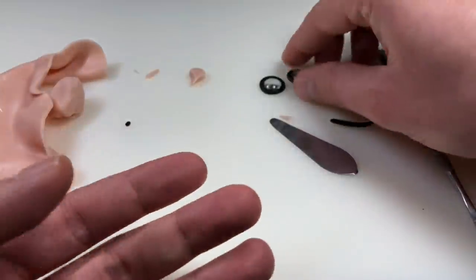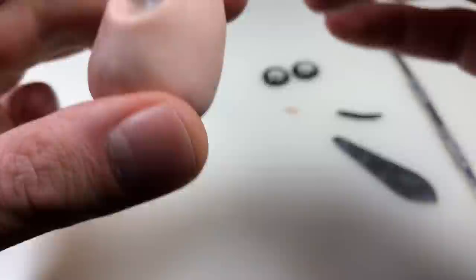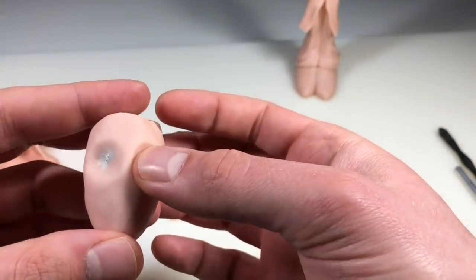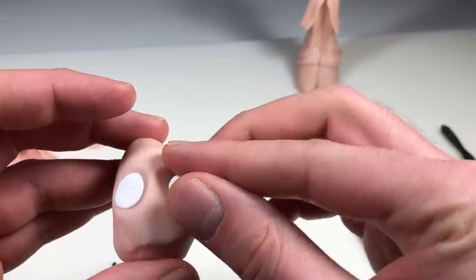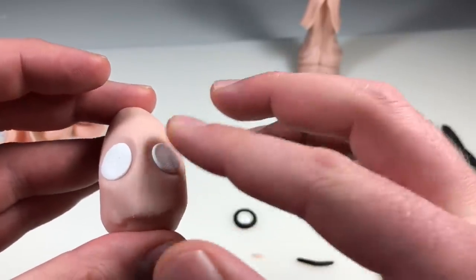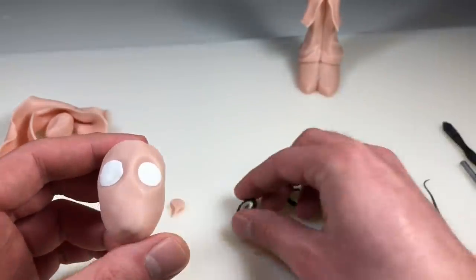We are going to create the eyes on our mad scientist's face, and I'm just pressing out the eye sockets with my large ball stylus. Adding some white clay. Doesn't matter what shape the eyes are because the goggles are going to magnify them. Kind of like that.